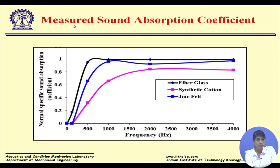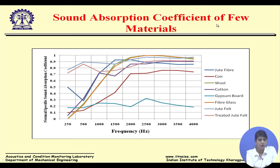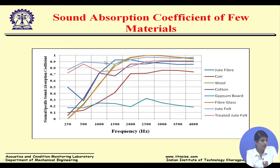The measured sound absorption coefficient of fiberglass — our traditional sound absorbing material — shows excellent performance. Our jute felt (blue curve) is comparative to fiberglass and close to it, indicating it is also a good sound absorbing material. We measured sound absorption coefficients of several materials: jute fiber, coir, wool, cotton, gypsum board, fiberglass, jute felt, and treated jute felt.